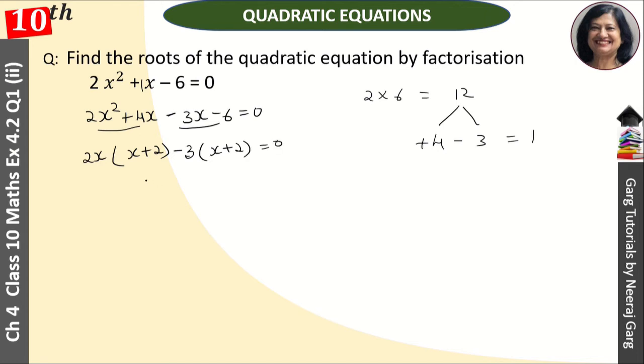That is equal to 0. So, this is x plus 2. And this is our 2x minus 3. That is equal to 0.